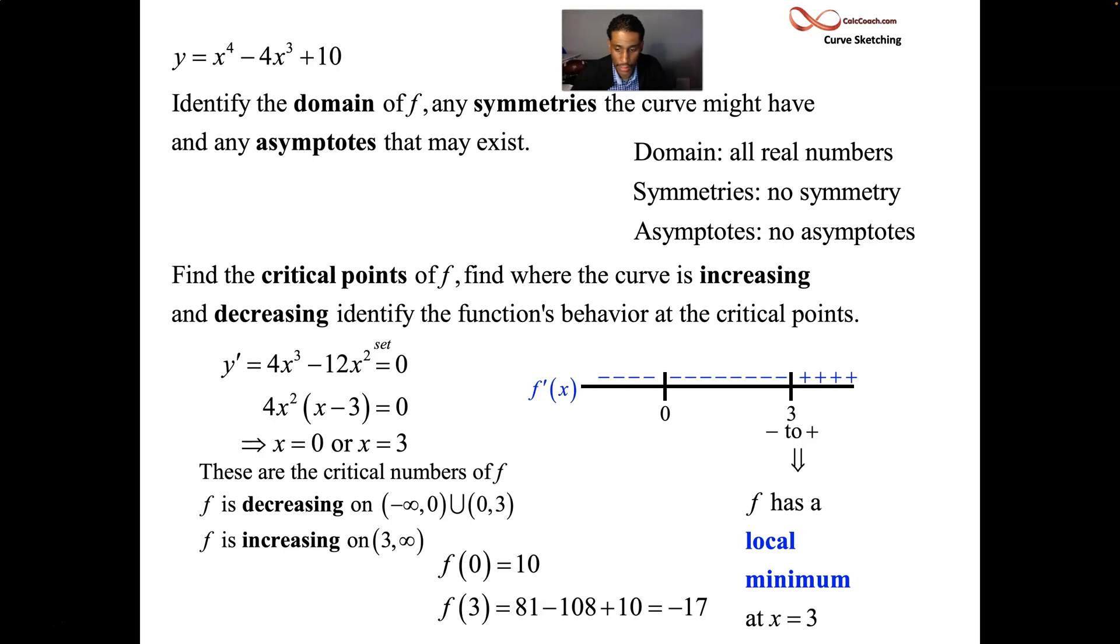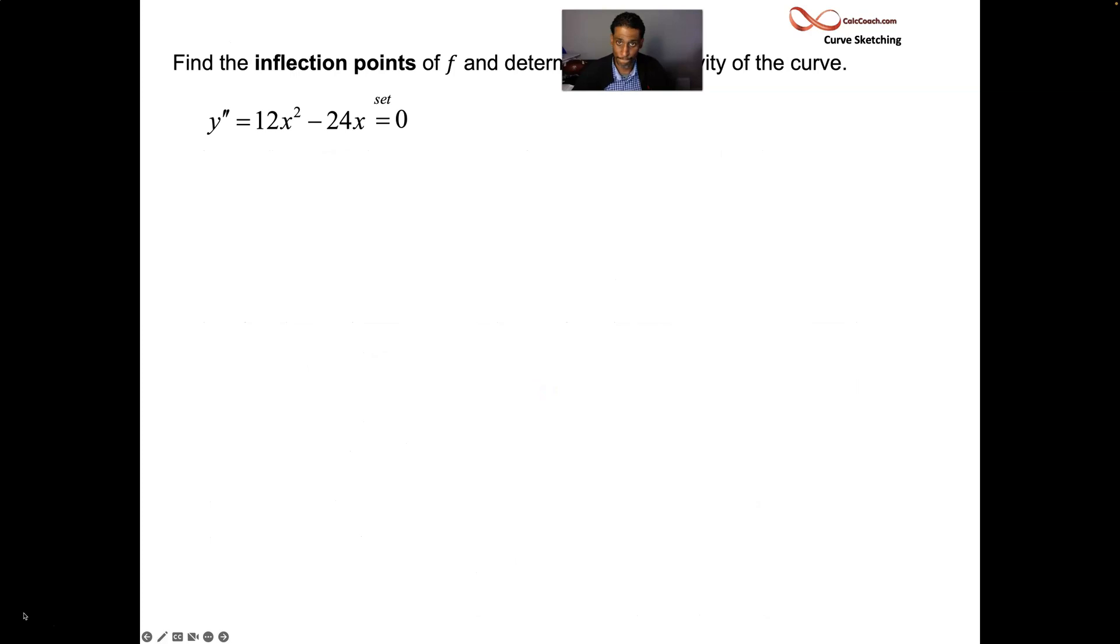Plug in zero just to know where that y value is, your y intercept. It'll be 10 when you plug a zero into that. All right, we've gotten all the information we can out of the first derivative. We have to move on to the second derivative, but go to the non-factored version of it, and when it's time to take that second derivative, we'll just do the power rule again and end up with 12x squared minus 24x.